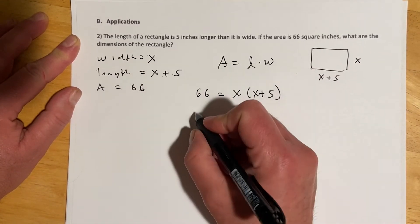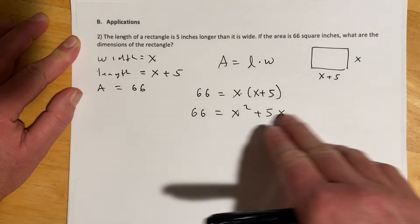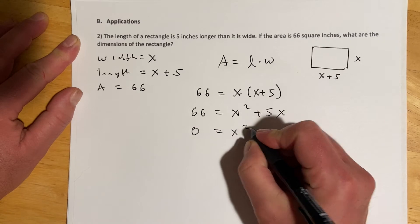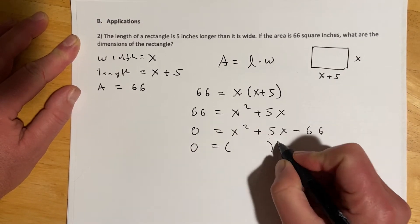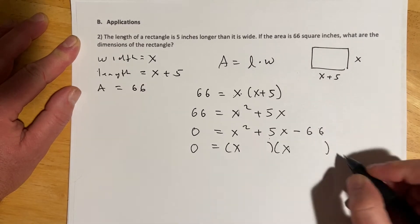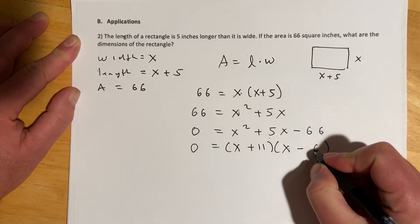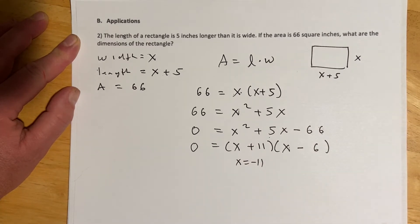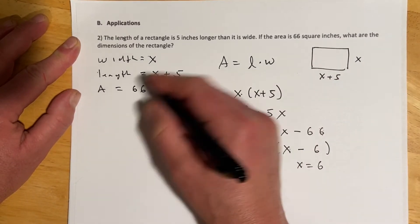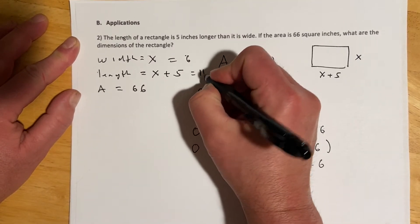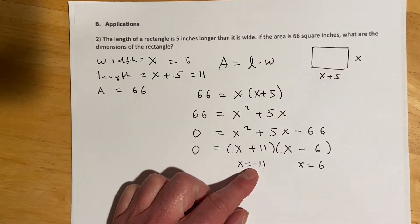Distributing gives us 66 equals x squared plus 5x. With a quadratic we want to get to zero, so bring the 66 over: 0 equals x squared plus 5x minus 66. This looks like it will factor - two numbers that multiply to negative 66 and add to 5 would be positive 11 and negative 6. Negative 11 doesn't make sense as a distance, so x equals 6, and 6 plus 5 gives the length as 11. The dimensions are 6 and 11.